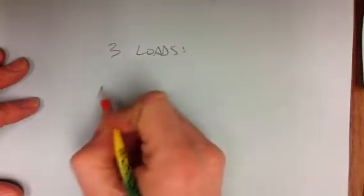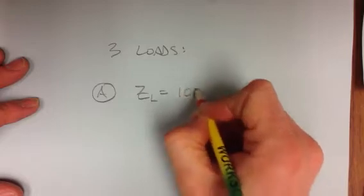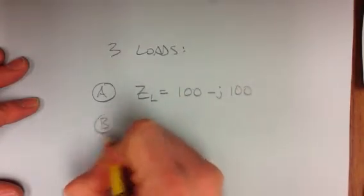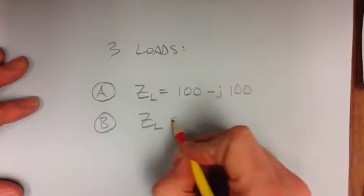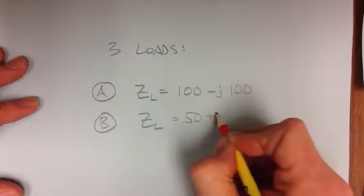Three loads. Load A, impedance is 100 minus J100. Load B equals, let's say, 50 plus J100.